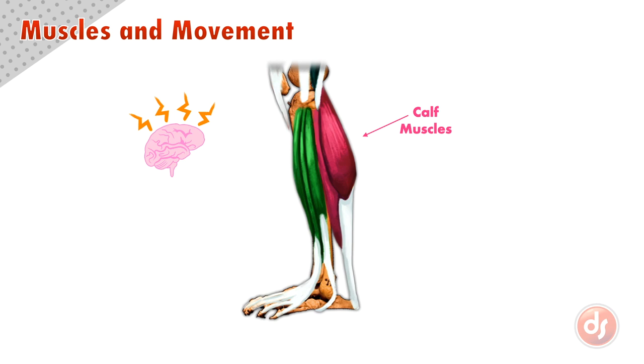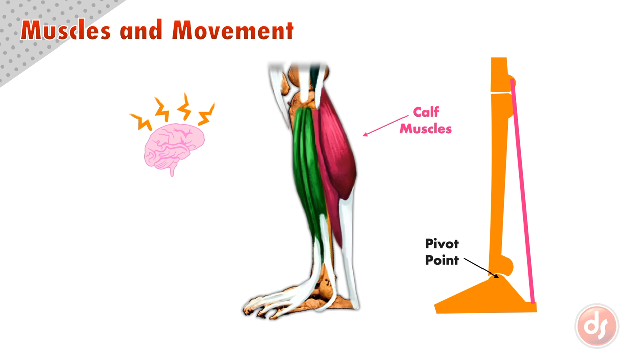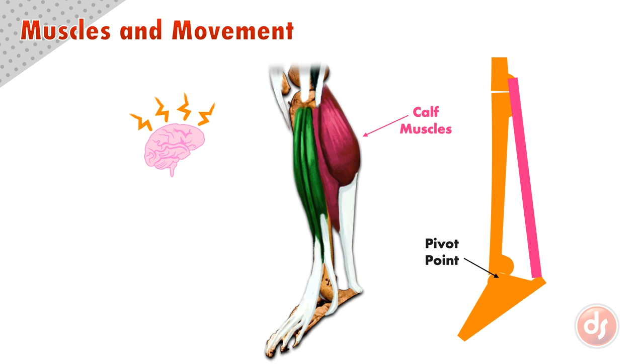In general, a muscle will move the bone below. Here the calf group of the muscle sits on the lower leg, but it pulls on the heel and moves the foot.